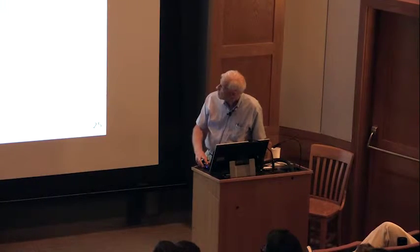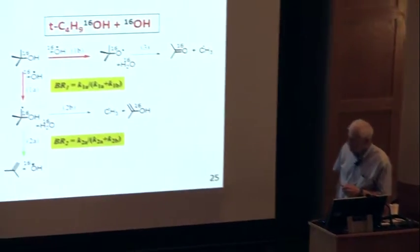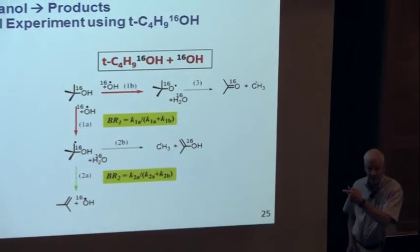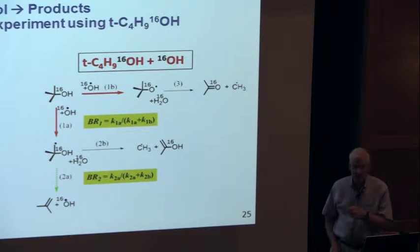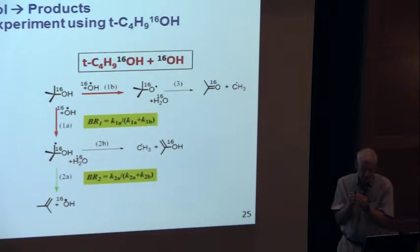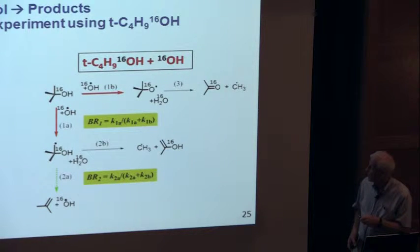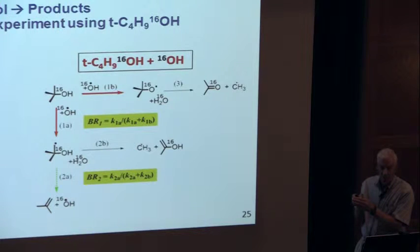Regular tert-butanol contains oxygen-16. The labeled tert-butanol contains oxygen-18. The absorption spectrum of OH with oxygen-16 is not exactly the same as with oxygen-18. That means we can tune our laser to be coincident with a line of OH with oxygen-16, or tune it to be coincident with a line of OH with oxygen-18. So we can discriminate between the two isotopes.